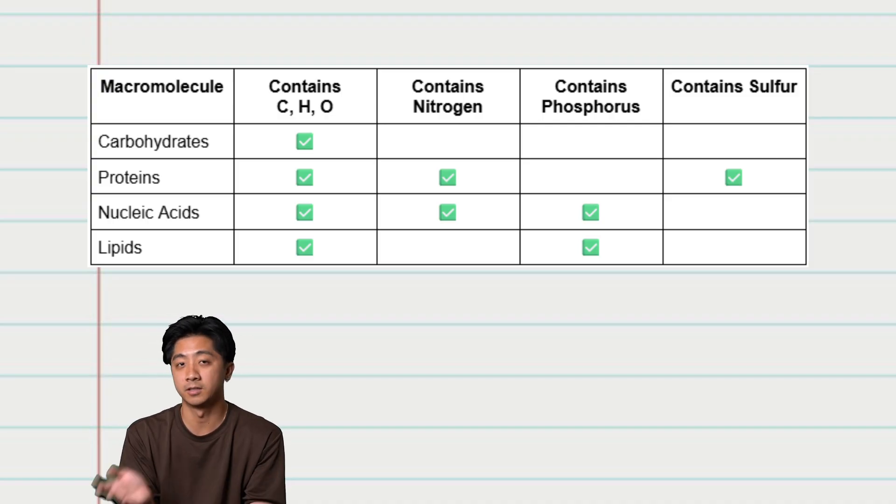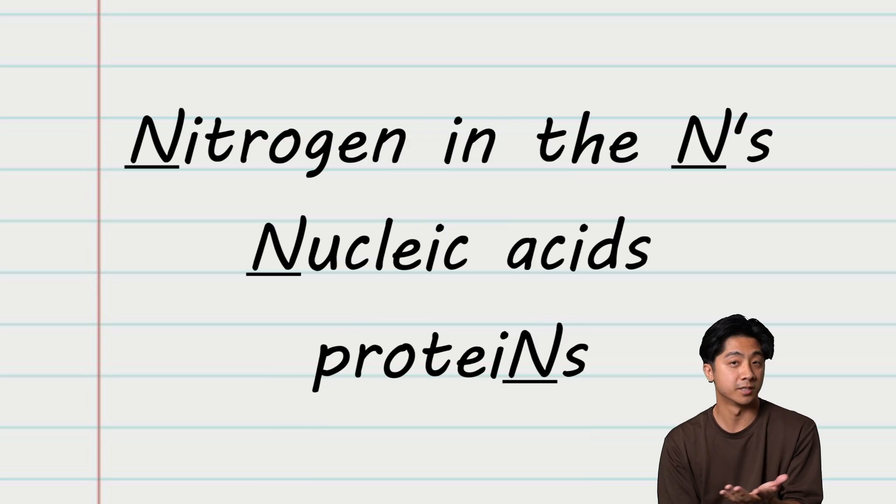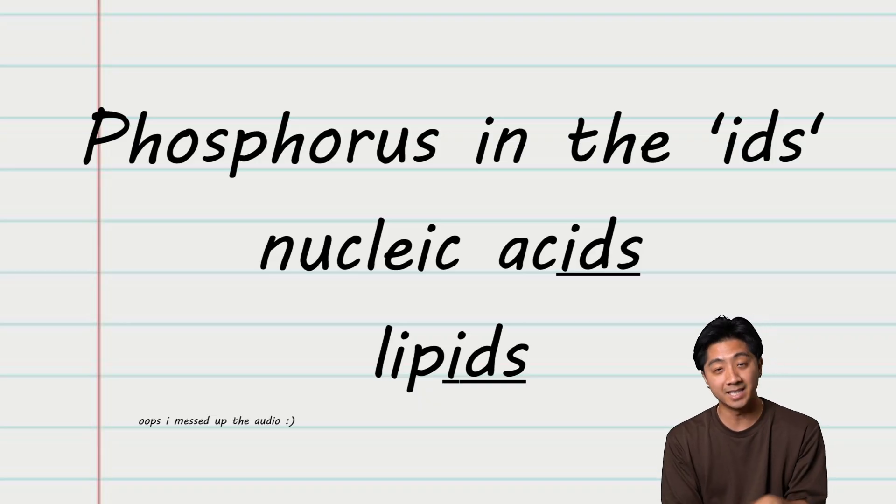For carbohydrates, they don't use any of the other elements, so carbon, hydrogen, oxygen. Here are some mnemonics that I used in class. Nitrogen is found in the ends: nucleic acids and proteins. Phosphorus is found in the ids, so nucleic acids and lipids. This is what I used, but if you have any better ideas, let me know in the comments.